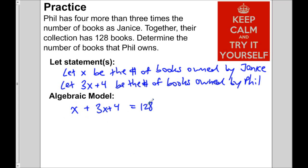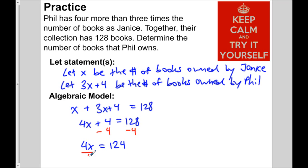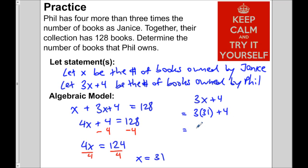Now that we have the algebraic model — the hardest part — let's solve. Simplifying: 4x plus 4 equals 128. Subtracting 4 from both sides: 4x equals 124. Dividing both sides by 4: x equals 31. Phil's expression is 3x plus 4, so 3 times 31 plus 4 equals 93 plus 4, which is 97. Phil owns 97 books.